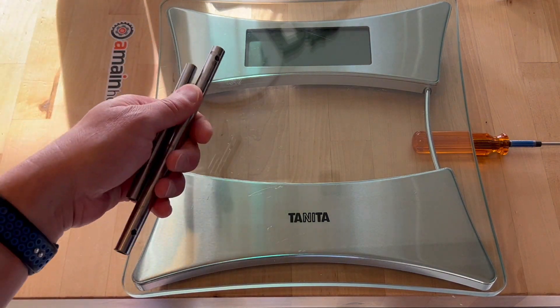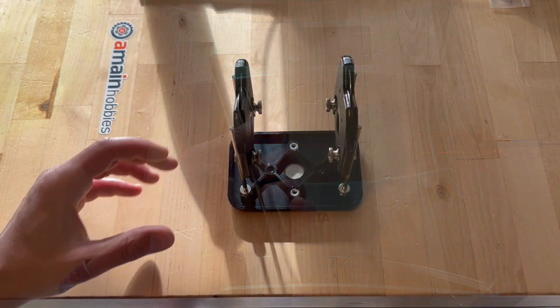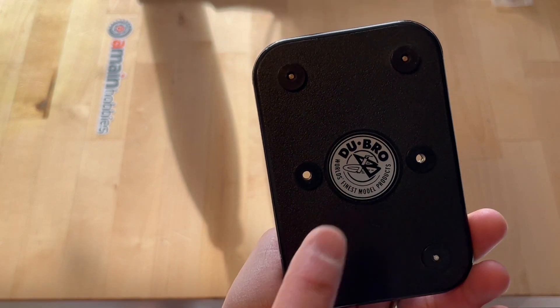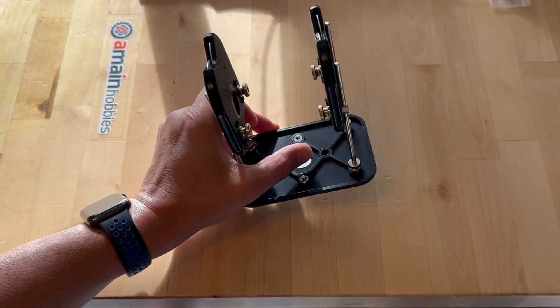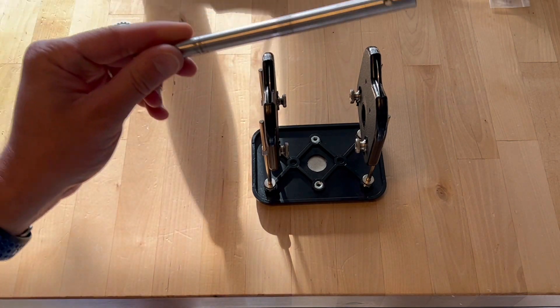There are other ways to tell whether the shaft is straight or not. So here I'm going to use the Dubro True Spin Prop Balancer. So the way I use this tool is that I'm going to place a shaft here.